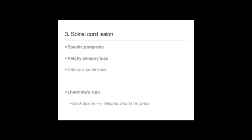Patients with cervical spinal cord involvement will present with the progressive onset of difficulty in walking and numbness. They may also describe the sensation of electric shocks in their limbs, which can be reproduced on examination through flexing the neck — this is known as Lhermitte's sign. On examination of their lower limbs, they will have a spastic paraparesis, and sensory examination may reveal patchy sensory loss.